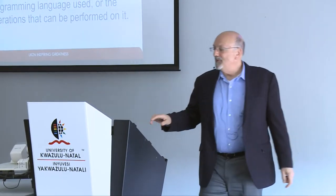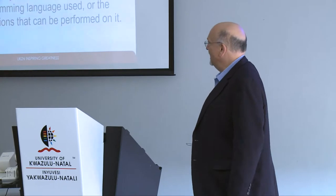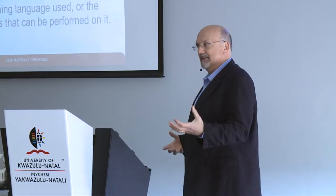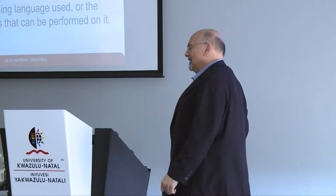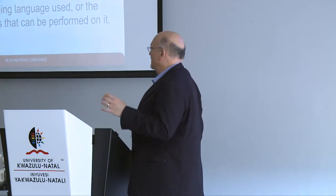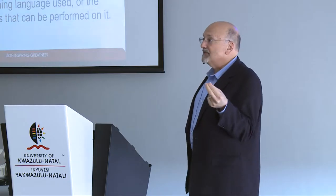Looking around for information on this, I came across a very concise definition of data type — not defining each word, but the concept. A particular kind of data item is defined by the values it can take, the programming language used, or the operations that can be performed on it. That pretty much sums it up.